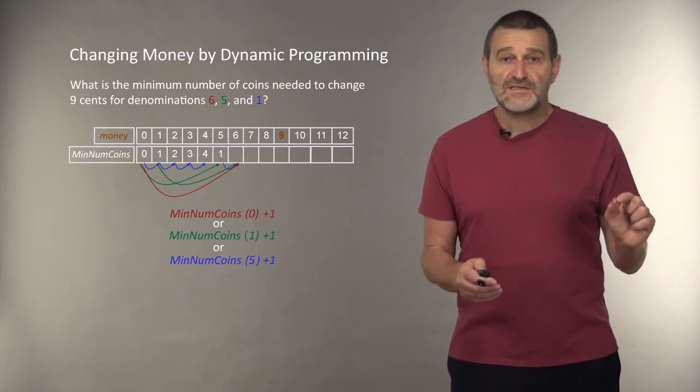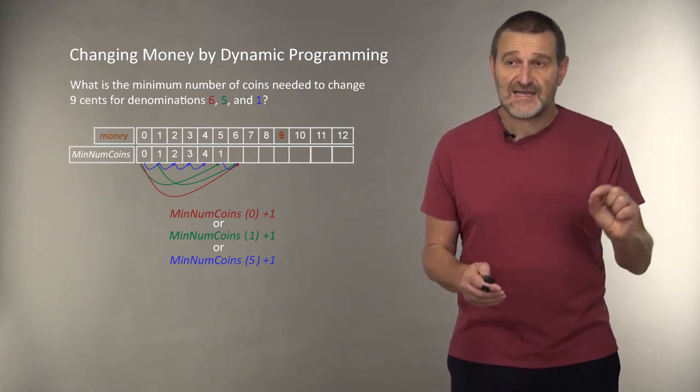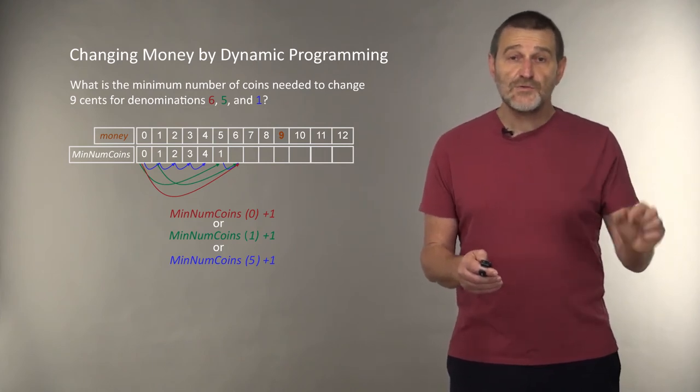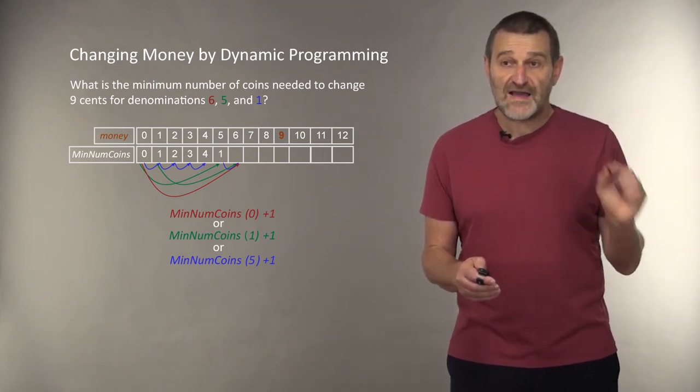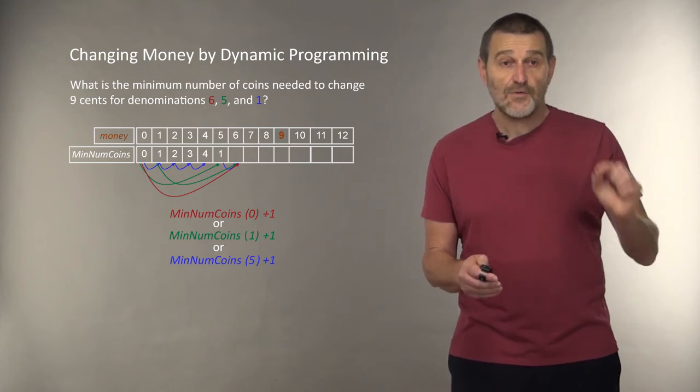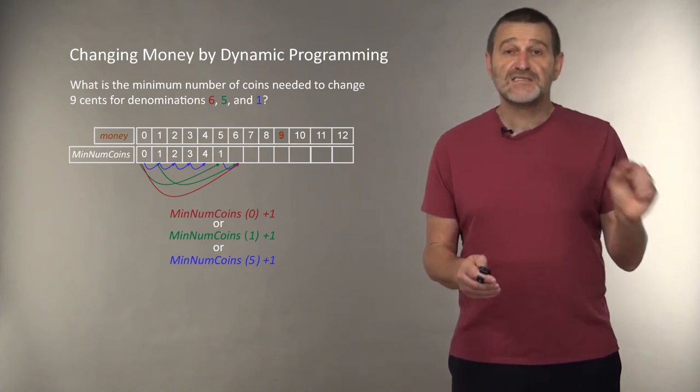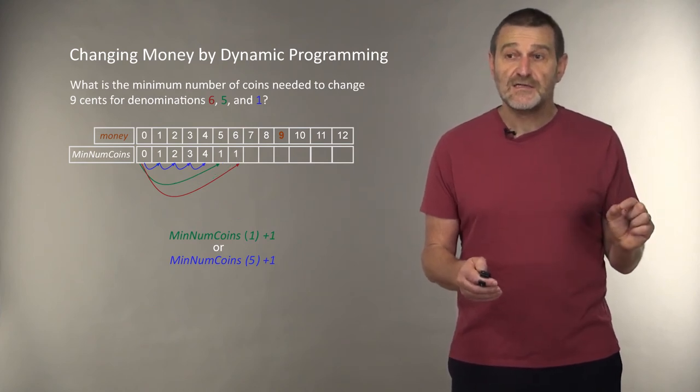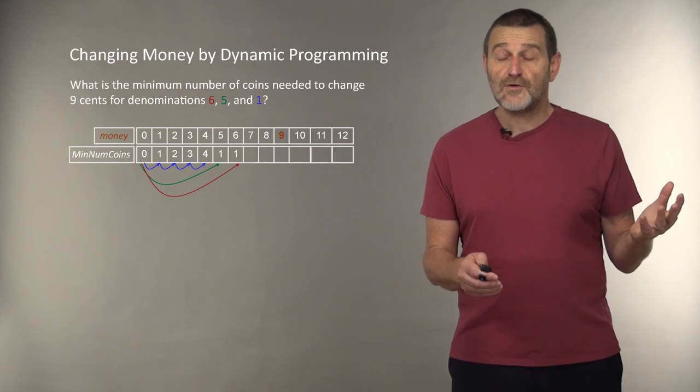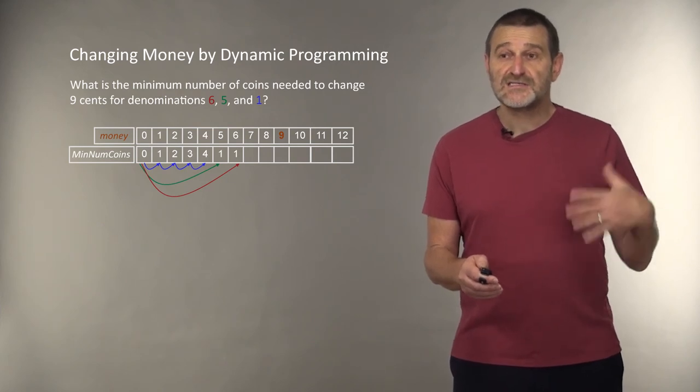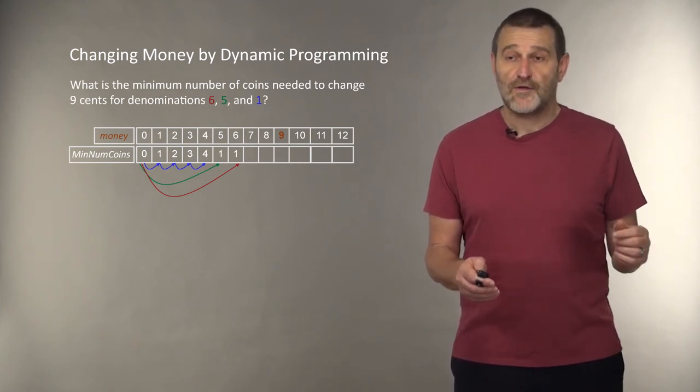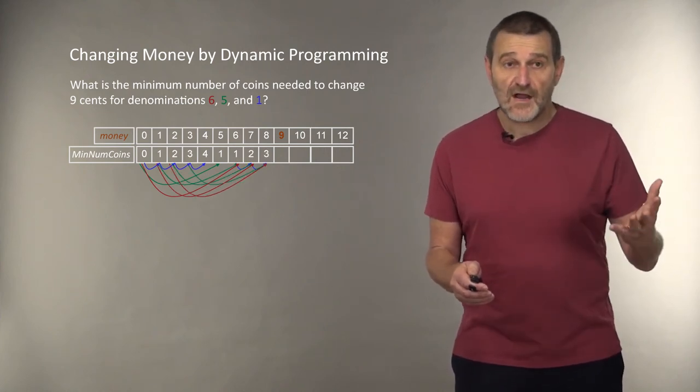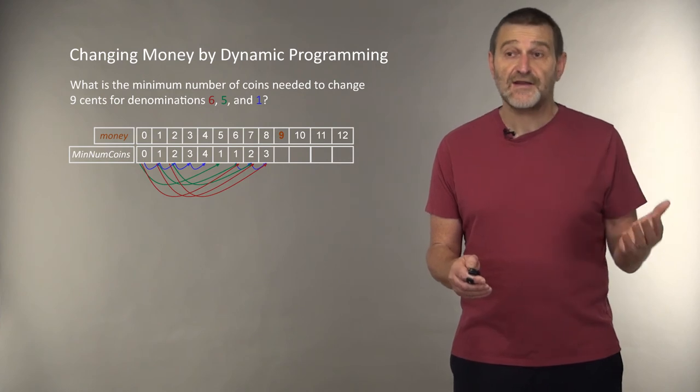Now, we are facing the problem of changing 6 cents. In this case, there are three choices. We can either use optimal change for 5 cents, or 1 cent, or 0 cents. And depending on which of them is the smallest, we will decide how to change 6 cents. So, in this case, it turns out that the best strategy is simply to add a 6 cents coin to the combination. We continue further and further until we arrive to changing 9 coins.